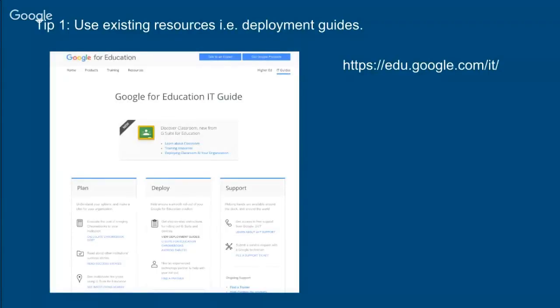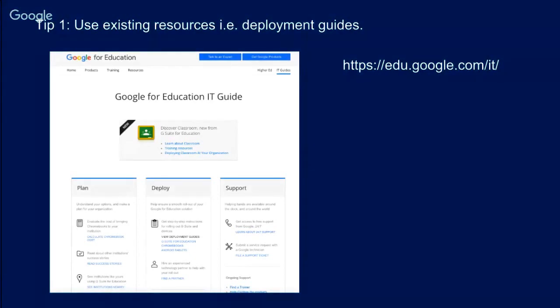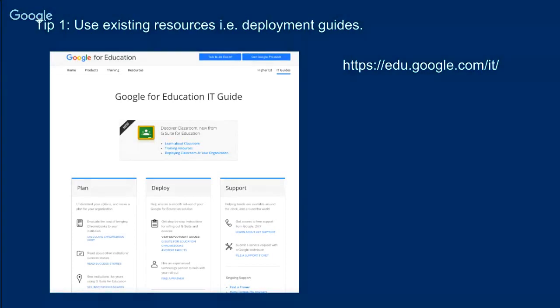My first tip is that there are lots of existing resources and deployment guides out there. The one with the URL in the top right corner is excellent — it gives a comprehensive guide of how to adopt G Suite in your environment. When I started, a lot of these tools weren't around and I wasn't aware of the support available, so I was a bit of a lone wolf. I really wish I'd made more use of everything out there. So make sure you use all the existing resources — I cannot emphasize that enough, whether you're just beginning or already part way through.